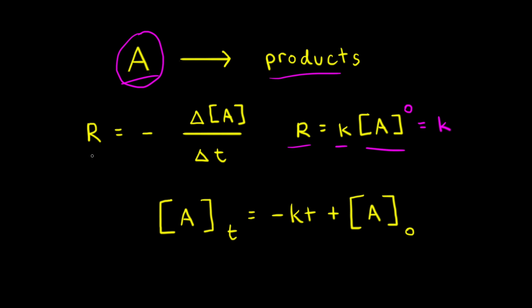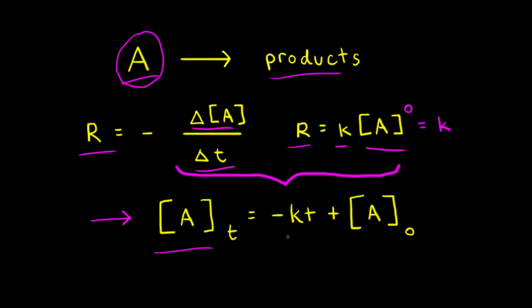We can also write that the rate of the reaction is equal to the negative of the change in the concentration of A over the change in time. If we set these two ways of writing the rate of reaction equal to each other and use some calculus, including the concept of integration, we will arrive at the integrated rate law for a zero order reaction, which says that the concentration of A at time T is equal to the negative of the rate constant K times the time, plus the initial concentration of A.